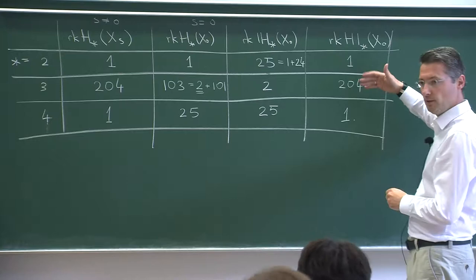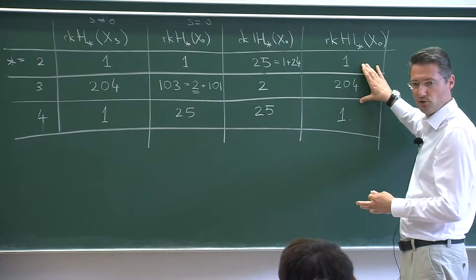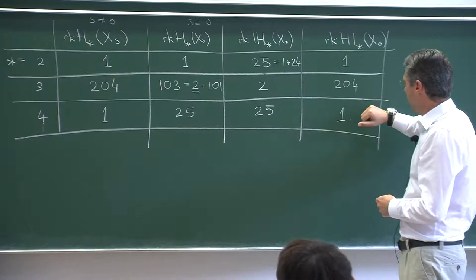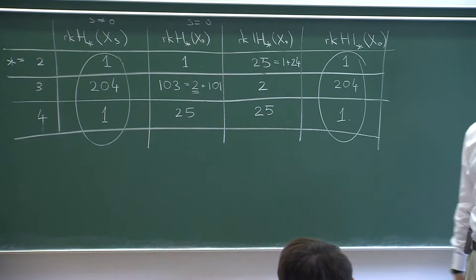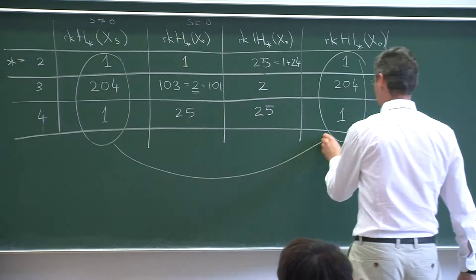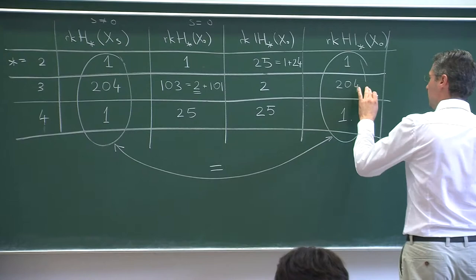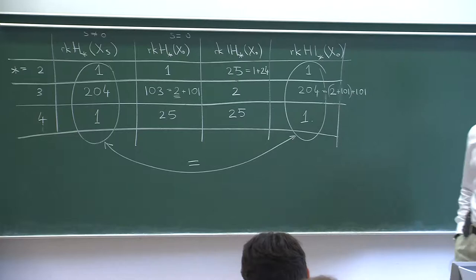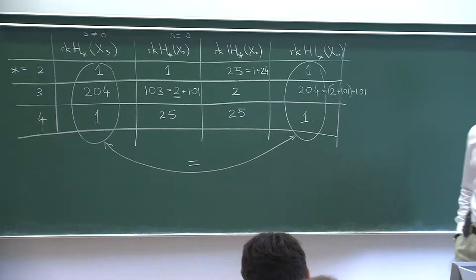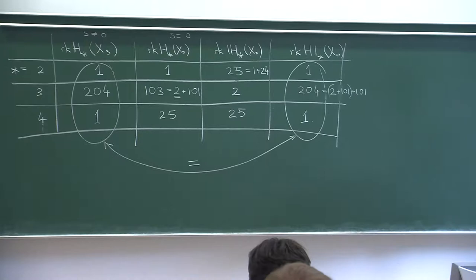Several observations: both the intersection homology and HI columns, as required, have Poincaré duality. But the most intriguing phenomenon is that the HI column for X_0 is exactly the same as the homology of the smooth X_S. It is hard to believe this is a coincidence. It is useful to think of 204 as 2 + 101 + 101: the 2 + 101 from ordinary homology of X_0, and another 101 added by HI.